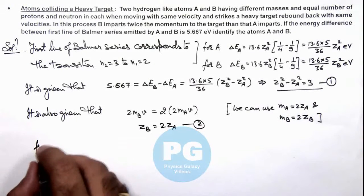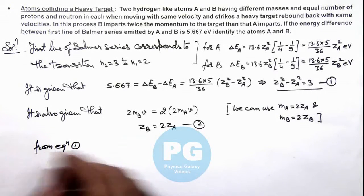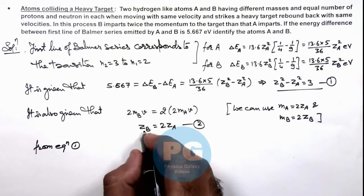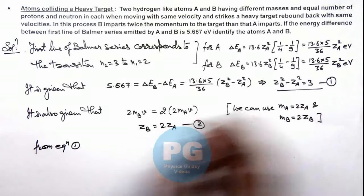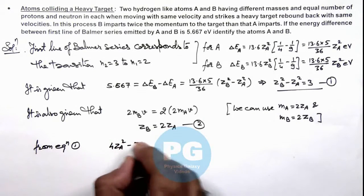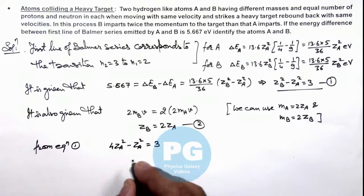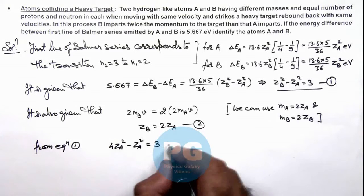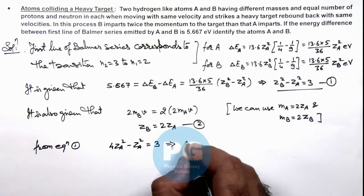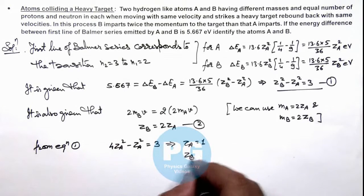From equation 1, if we substitute the values then Zᵦ we can write as 2Zₐ, this gives 4Zₐ² - Zₐ² is equal to 3. So simplifying, we are getting the value of Zₐ is equal to 1 and from equation 2, Zᵦ we are getting is 2.